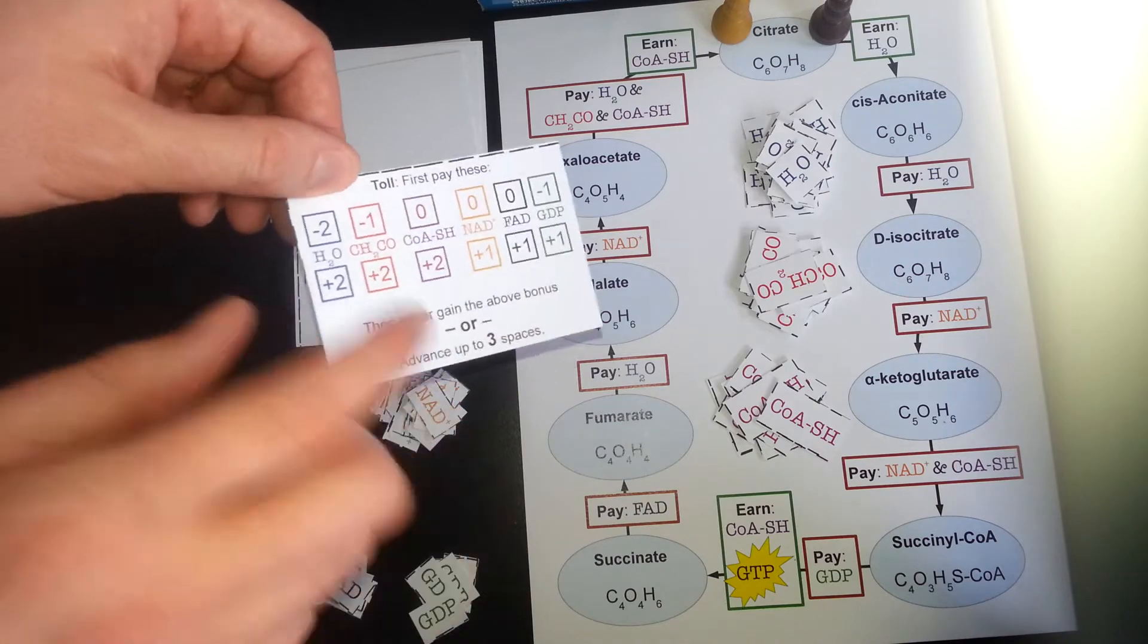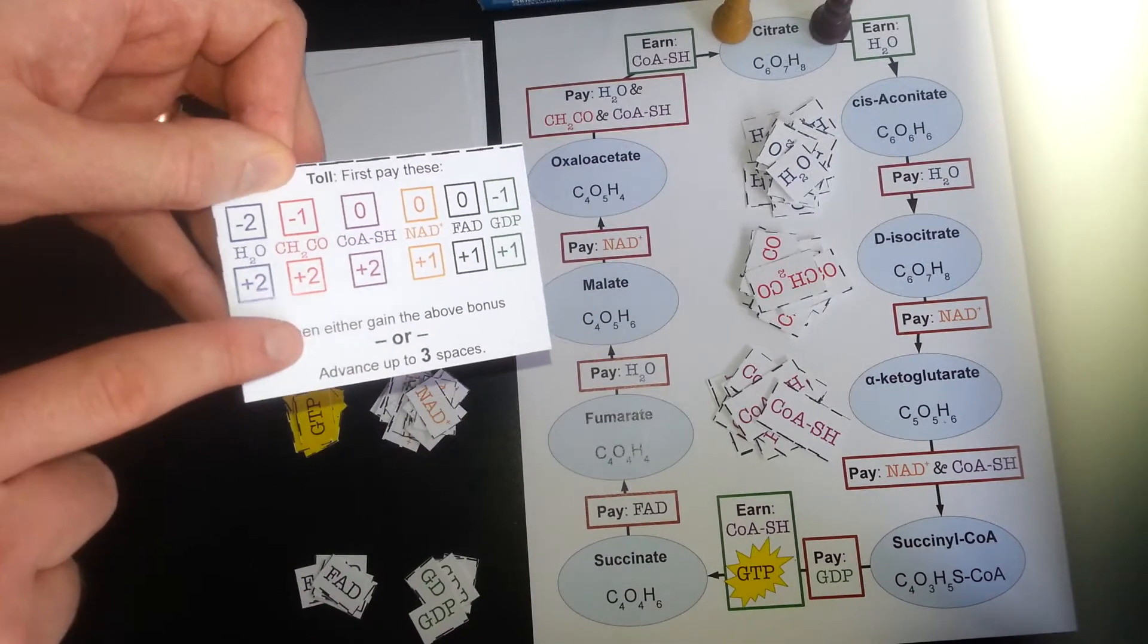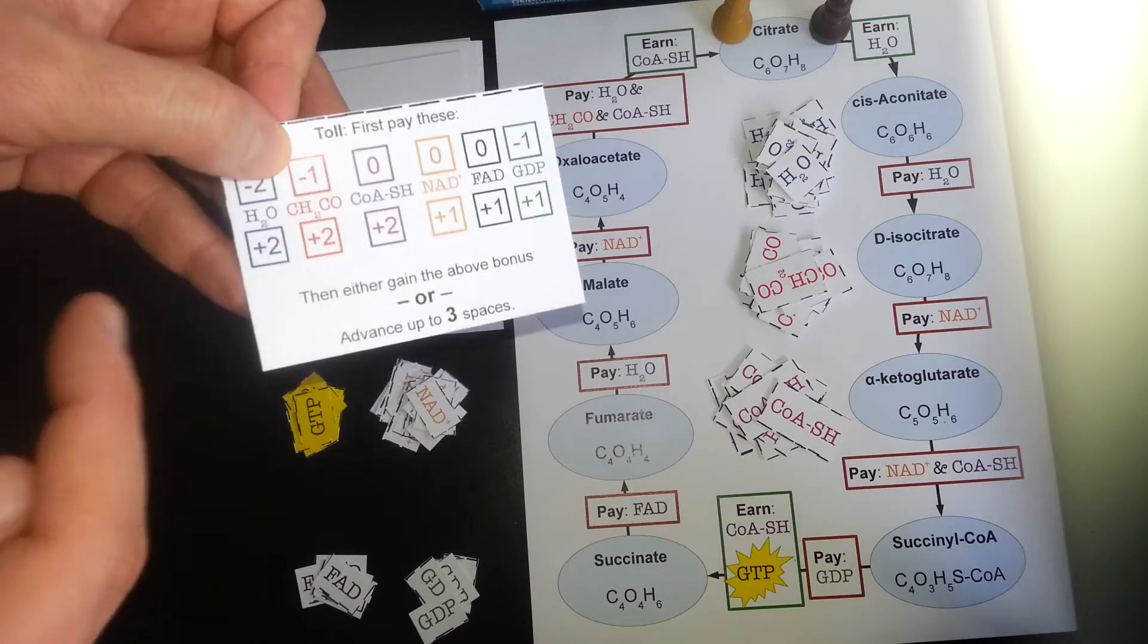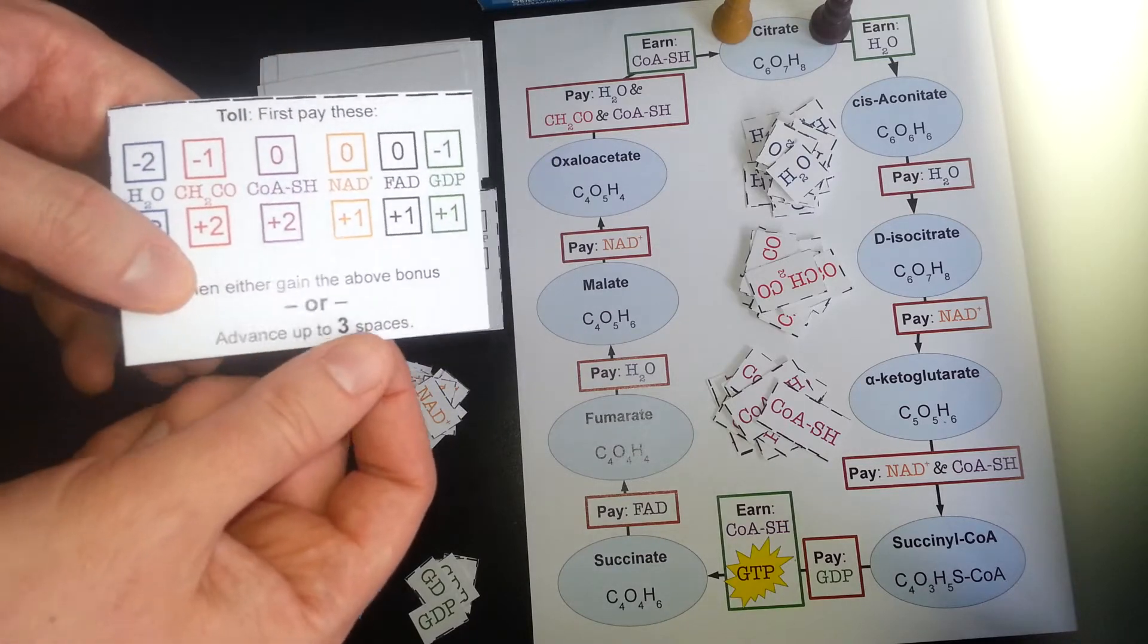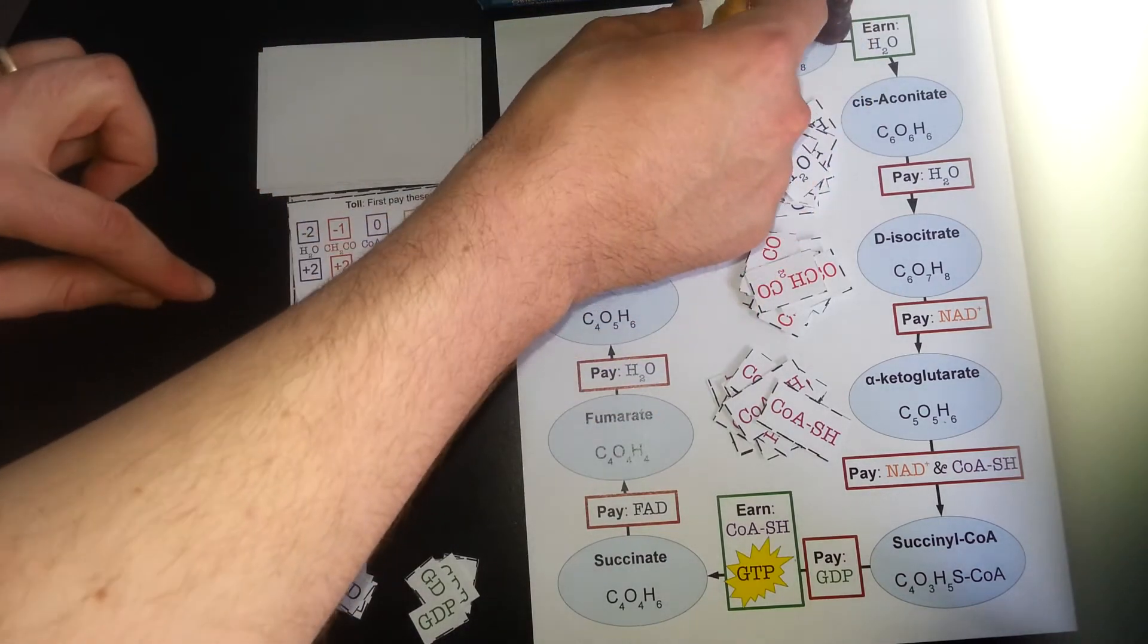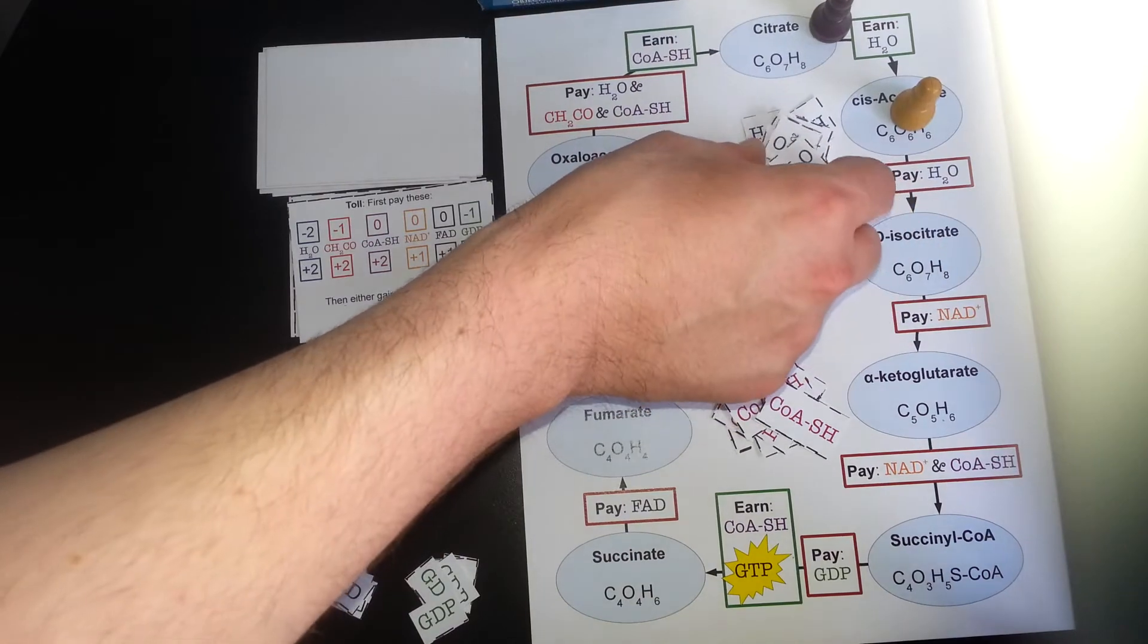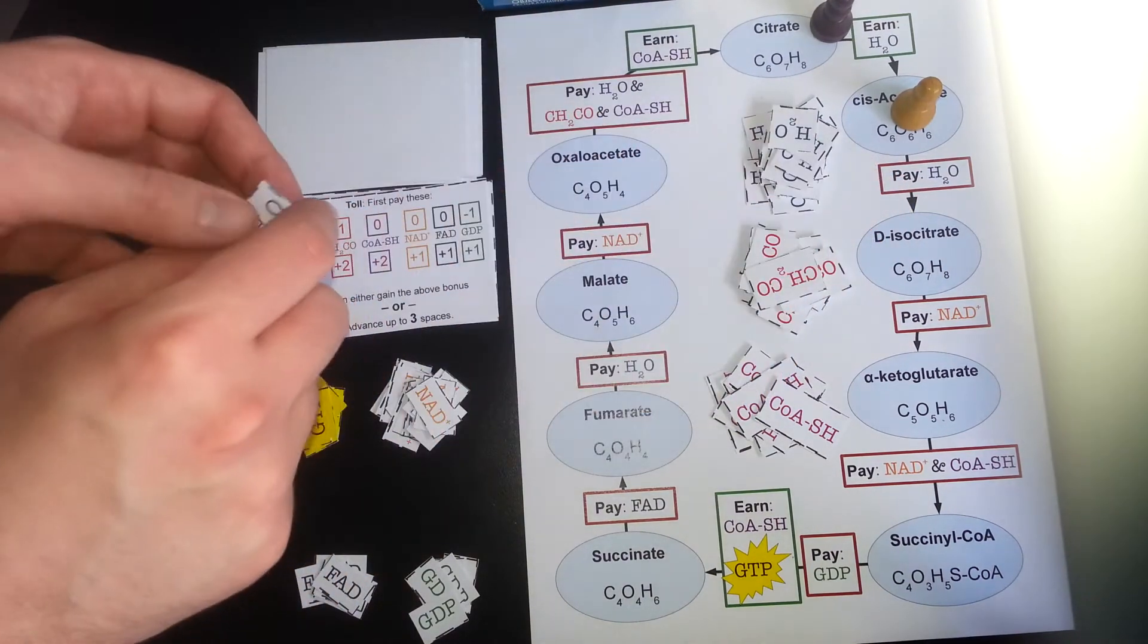So on my turn, the first thing I have to do is pay the toll. I don't have any, so I skip that. Then I have to choose. I can either gain this bonus or advance up to three spaces. Oh, three's a lot, so I'm going to go for that. Okay, so I advance my first space, and notice it says here I earn a water along the way, so I earn a water molecule. Boom.